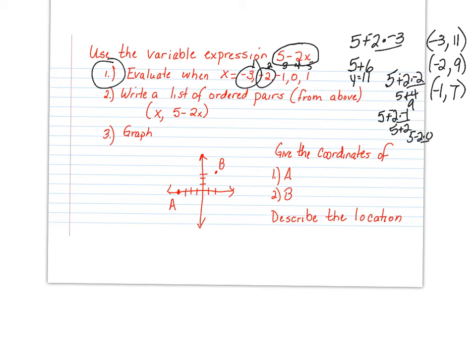Next one is 5 - 2 times 0. Well, that's 0, so we get 5. So, you're going to have (0,5). And then, you're going to have (1,3). I filled that in for you.